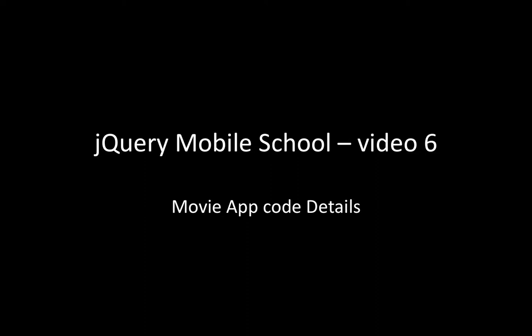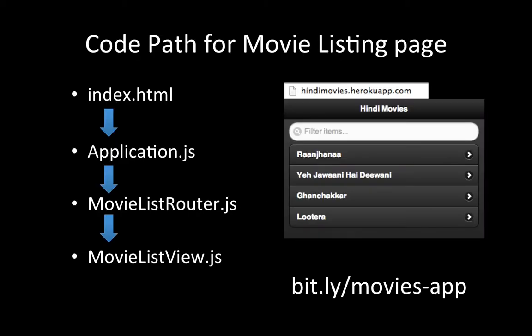This is the sixth video in this series. In the next ten minutes we're going to look at how we organized our jQuery Mobile app and how we integrated Backbone.js into it. This code that I'm going to describe is live, so you can check it out at bit.ly/movies-app.